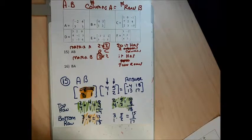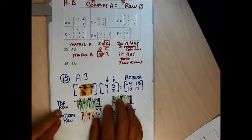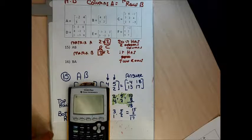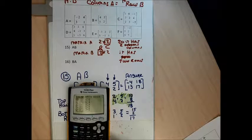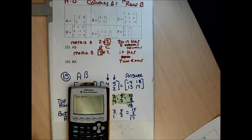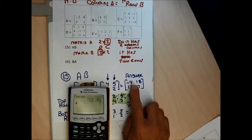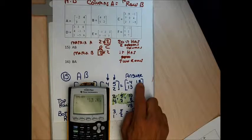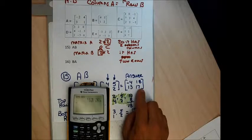Let me check on my calculator. I go second matrix names A, then second matrix names B, so that's matrix A times matrix B. When I hit enter: negative 4, negative 2, 13, and 17. It's way safer doing this on your calculator — if I didn't check my work I would have had a wrong answer from dropping that negative sign.